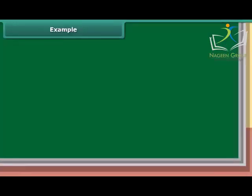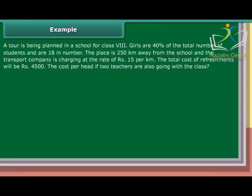Example: A tour is being planned in a school for class 8. Girls are 40% of the total number of students and are 18 in number. The place is 250 km away from the school and the transport company is charging at the rate of Rs. 15 per km. The total cost of refreshments will be Rs. 4,500. Find the cost per head if two teachers are also going with the class.